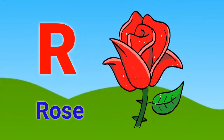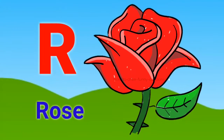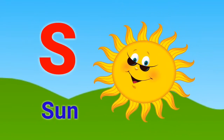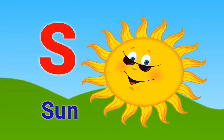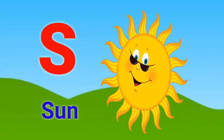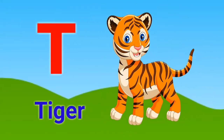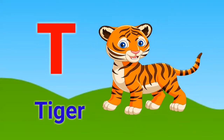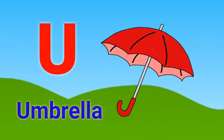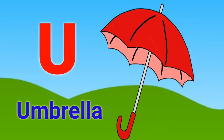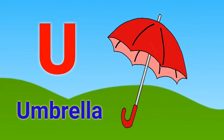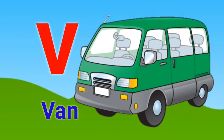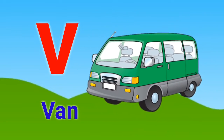R for rose, S for sun, T for tiger, U for umbrella, V for brain.